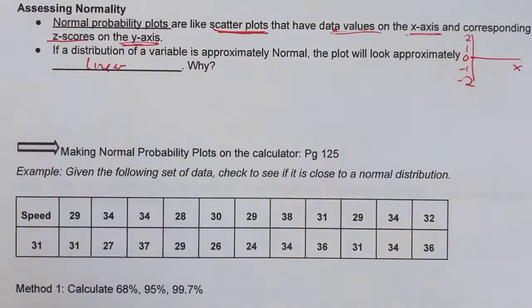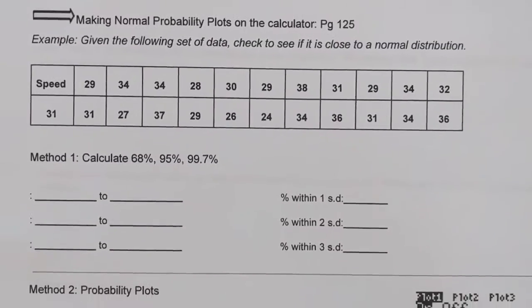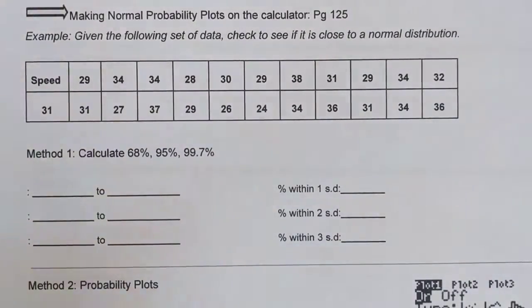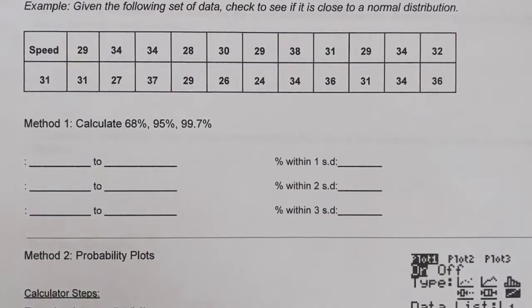So first we're going to do the two different methods. First we're going to calculate 68 percent, 95 percent, and 99.7 percent to see what percent the data actually falls in those windows of 1, 2, and 3 standard deviations. The second thing we're going to do is the probability plot on the TI-84 using the L1 STAT tools.